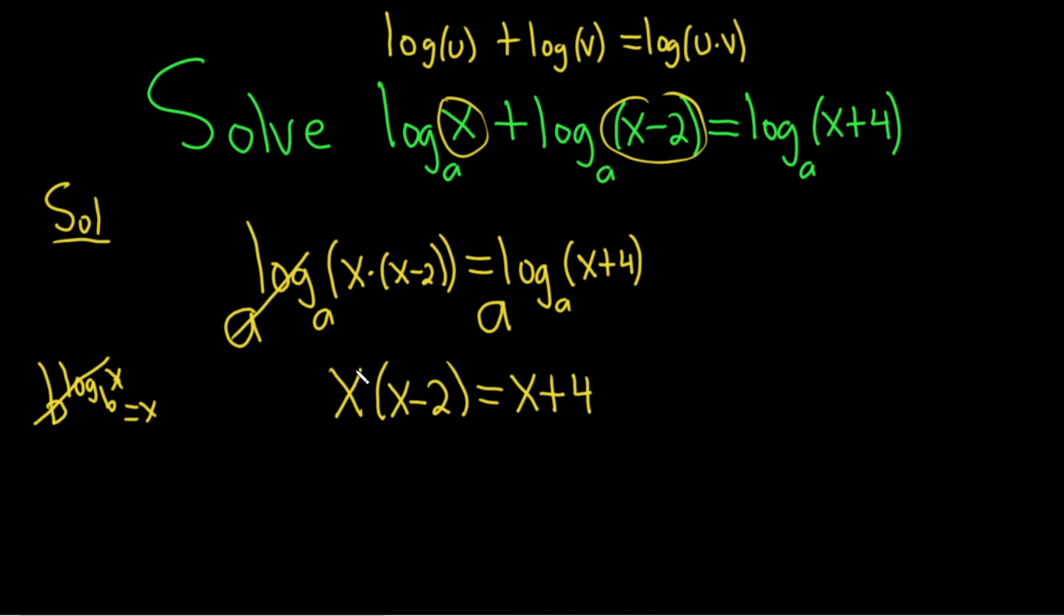We have to solve this, so let's distribute the x. x times x is x squared, x times negative two is negative two x, and this equals x plus four.